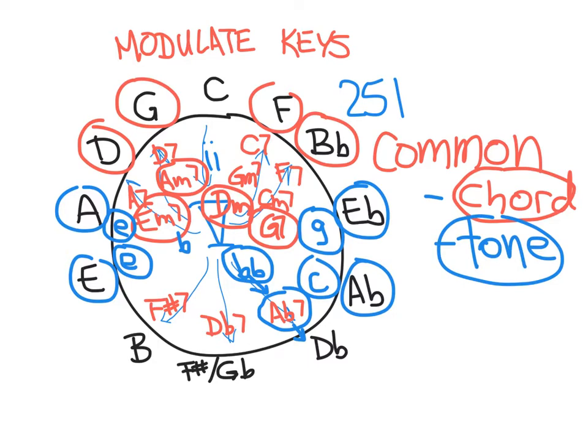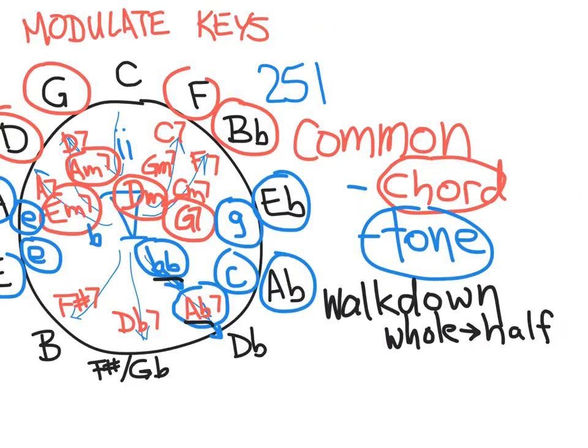You go up a whole step, it would be staying diatonic at first. Half-step down to an A, up to D. So, if you walk down a whole step and two whole steps, that takes you up a half-step.